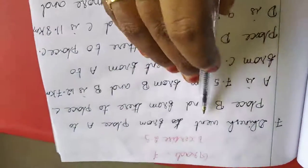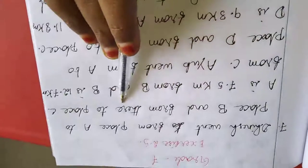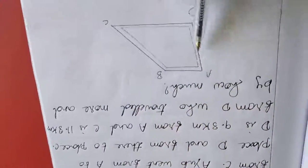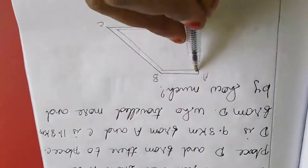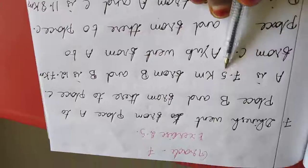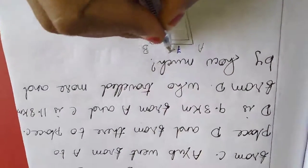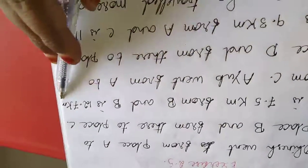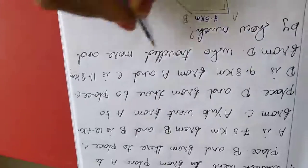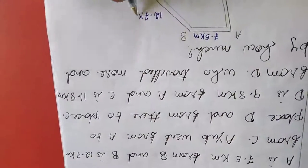See here, Dinesh went from place A to place B and from there to place C. This is the part A to B, B to C. Dinesh is moving like this, A to B, B to C. Then A is 7.5 km from B, so this distance is 7.5 km. Next one is B is 12.7 km from C, so this one is 12.7 km.